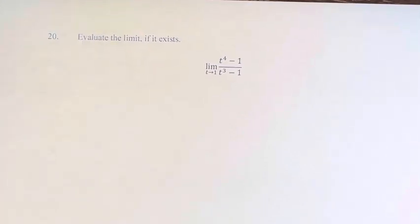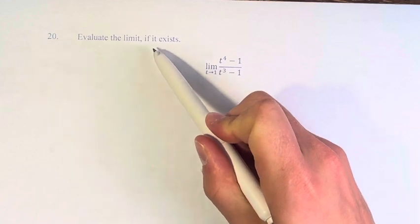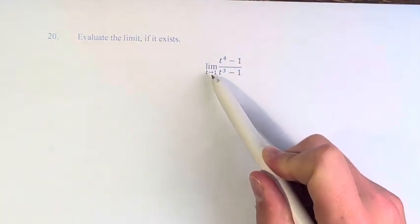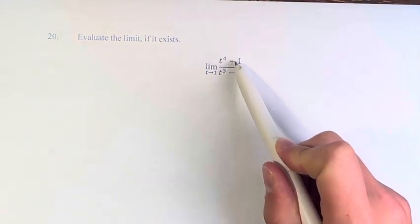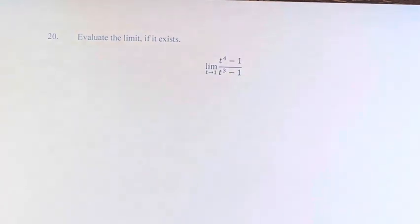Hello and welcome back to another video. In this problem, we're asked to evaluate the limit if it exists. We read the limit as t approaches 1 of t to the fourth minus 1 over t cubed minus 1.